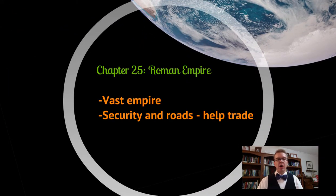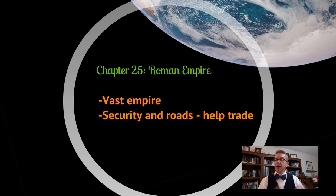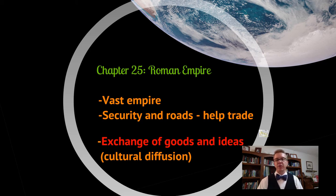The Roman Empire in chapter 25 is also important. It's a vast, huge empire — bigger than Alexander's — and it lasts much longer because of security from the Roman legions and because they built roads. Roads helped move troops around, providing security and stability, but also made trade easier. If it's secure and easier, people are more likely to trade, leading to an exchange of goods and ideas throughout Western Europe, the Middle East, and North Africa — more examples of cultural diffusion.